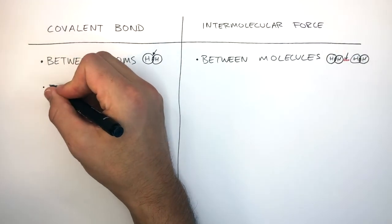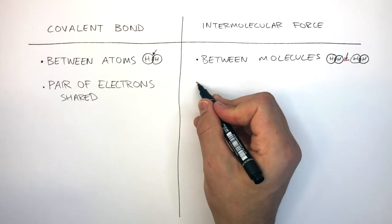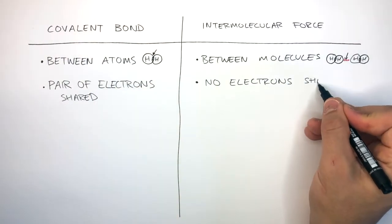In a covalent bond, a pair of electrons are shared. Whereas, in an intermolecular force, there are no electrons shared.